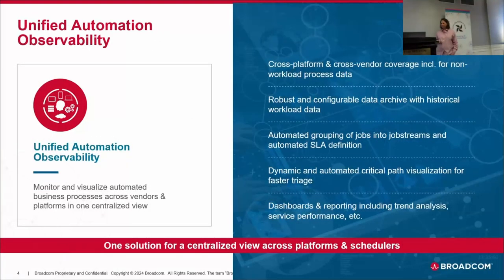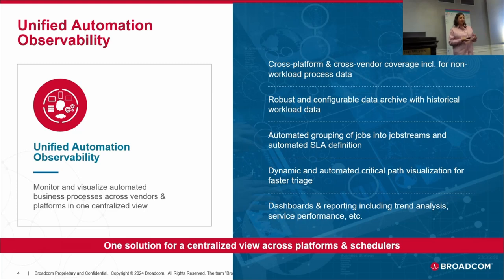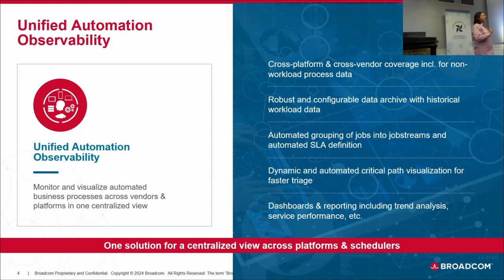For unified observability, the key part is having a single pane of glass across all different automation solutions, or even just across all your Airflow instances. But it's more than just consolidation. How do you make meaning out of these jobs? If you've got hundreds of thousands of defined tasks with cryptic names not meaningful to a business user, how do you put them in the context of your organization? Within AAI, the very first thing you do is create what we call a business area hierarchy.